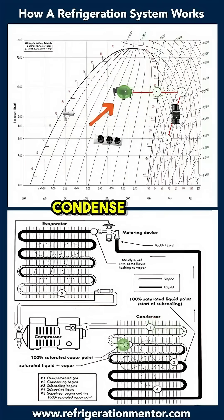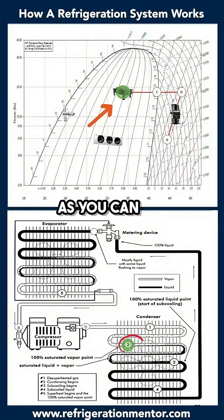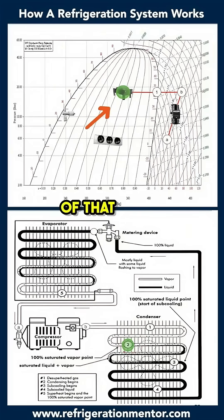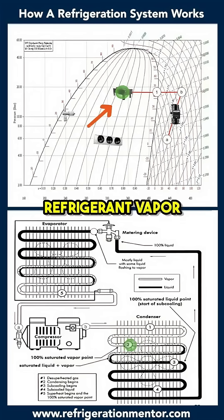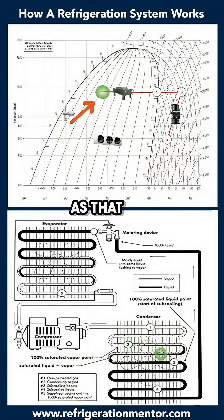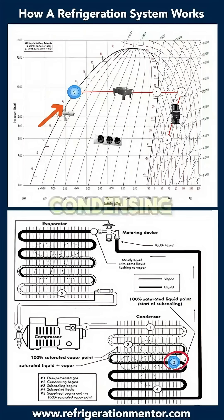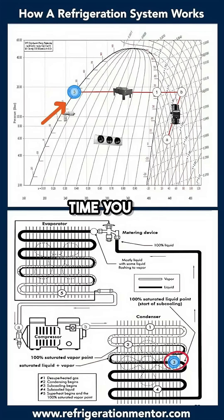When you hit your dew point, this is when you start to condense. Inside the enthalpy diagram, as you can see at point 2, that's where the condensing starts — you're starting to drop liquid out of the refrigerant vapor. As that fan blows across the coil rejecting the heat, you start to get more and more condensing happening.